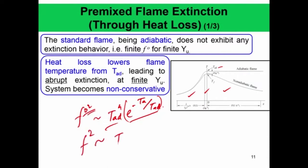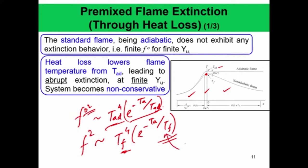By analogy, the actual F will also behave as Tf⁴ times e^(−Ea/R·Tf), where Tf is the maximum temperature the flame reaches under heat loss, compared to T_ad in the adiabatic case. As heat loss increases, Tf will continue to decrease, decreasing F² further. At some point there will be abrupt extinction due to this very strong Arrhenius dependence.